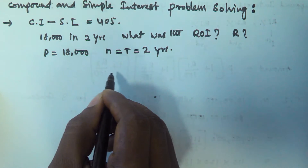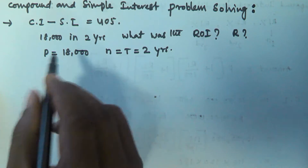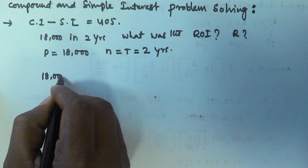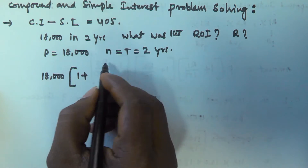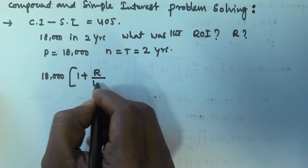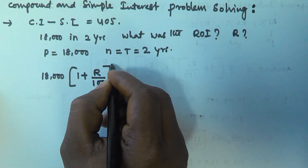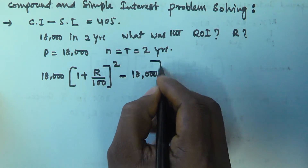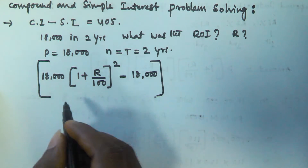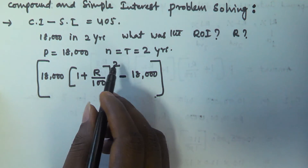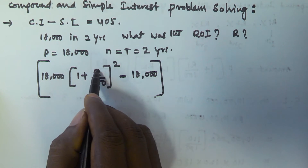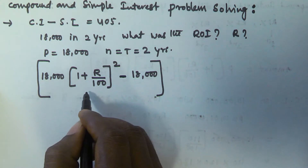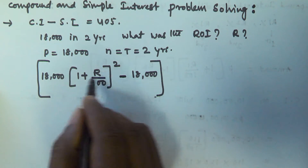The compound interest is the compounded amount minus the principal P. So the compounded amount is given by P into (1 + R/100) to the power of N, that is 18,000 into (1 + R/100)² minus the principal amount 18,000. This gives us the compound interest.